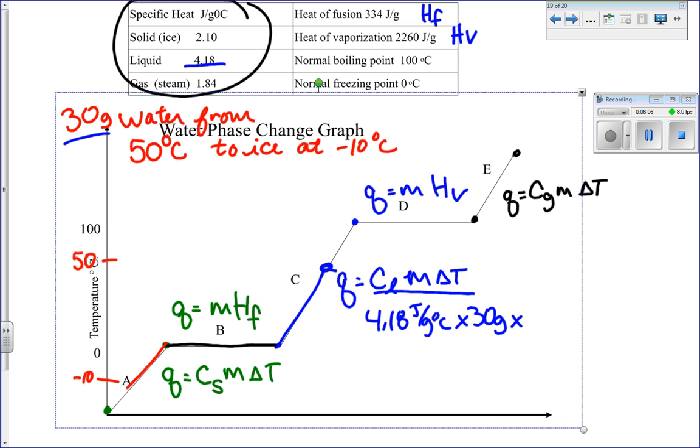And then I need to figure out what's my temperature change on this blue line segment. Well, I'm starting at 50, going to 0. So 50 minus 0 is 50 degrees Celsius. And then I just multiply that all together. 4.18 times 30 times 50. And I end up with 6,270 joules. We're going to see it takes quite a bit of energy to go through these changes.